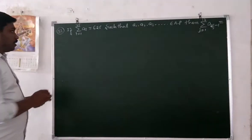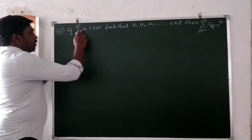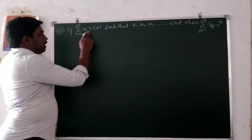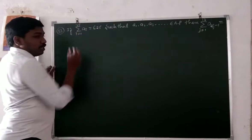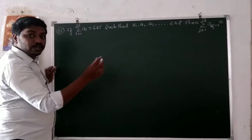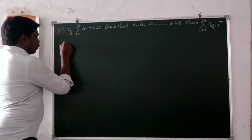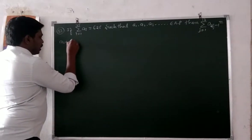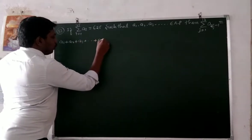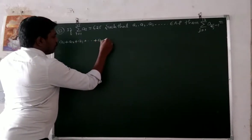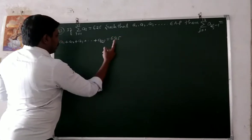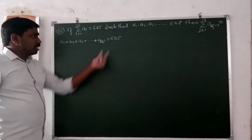Question number 83. Summation of a, with a running from 1 to 25, equals 625. So a1 plus a2 plus a3 plus up to a25 is equal to 625. The sum of 25 terms is 625.